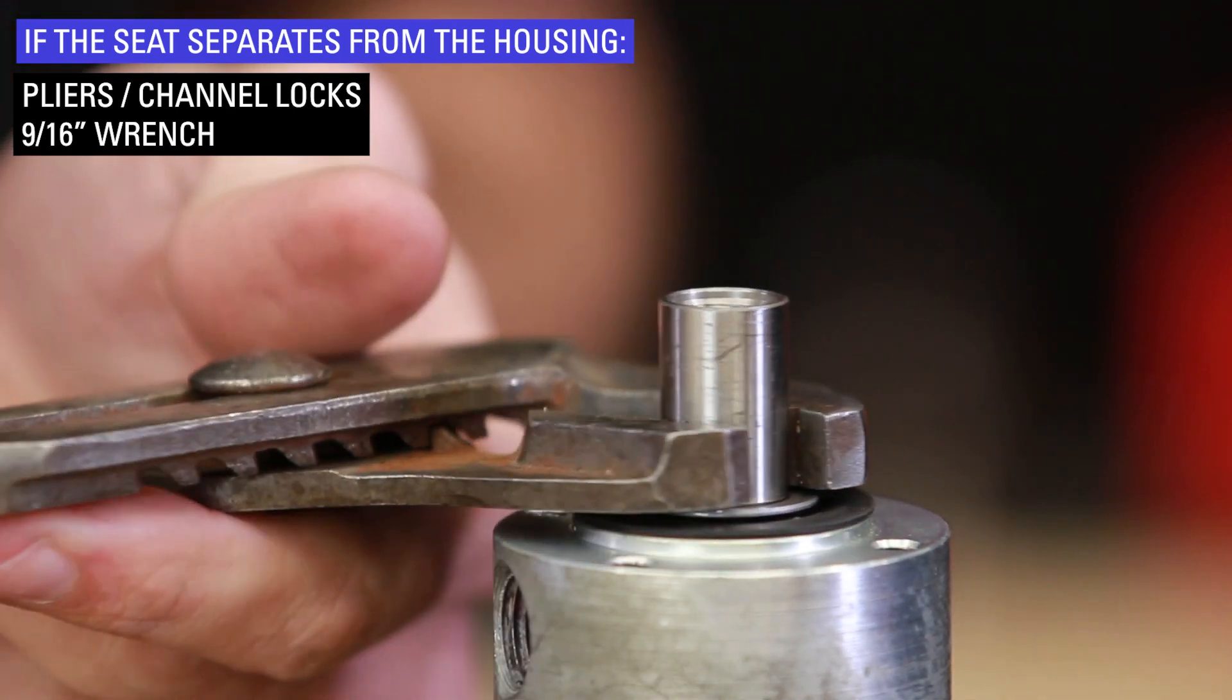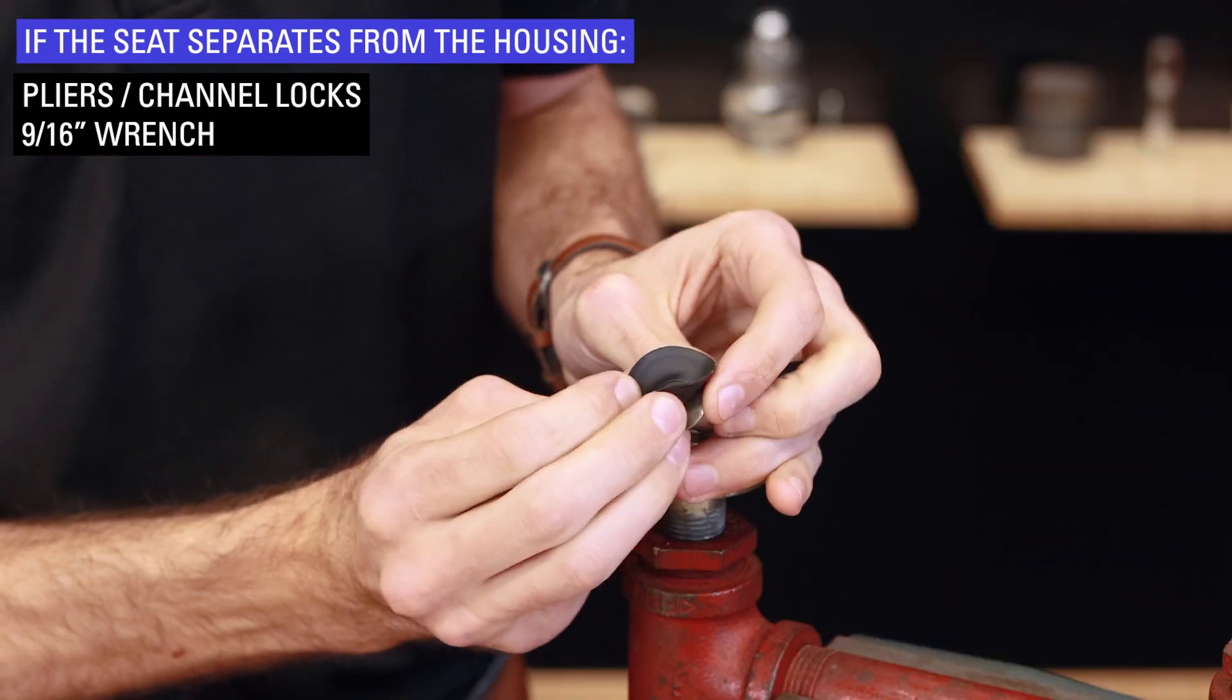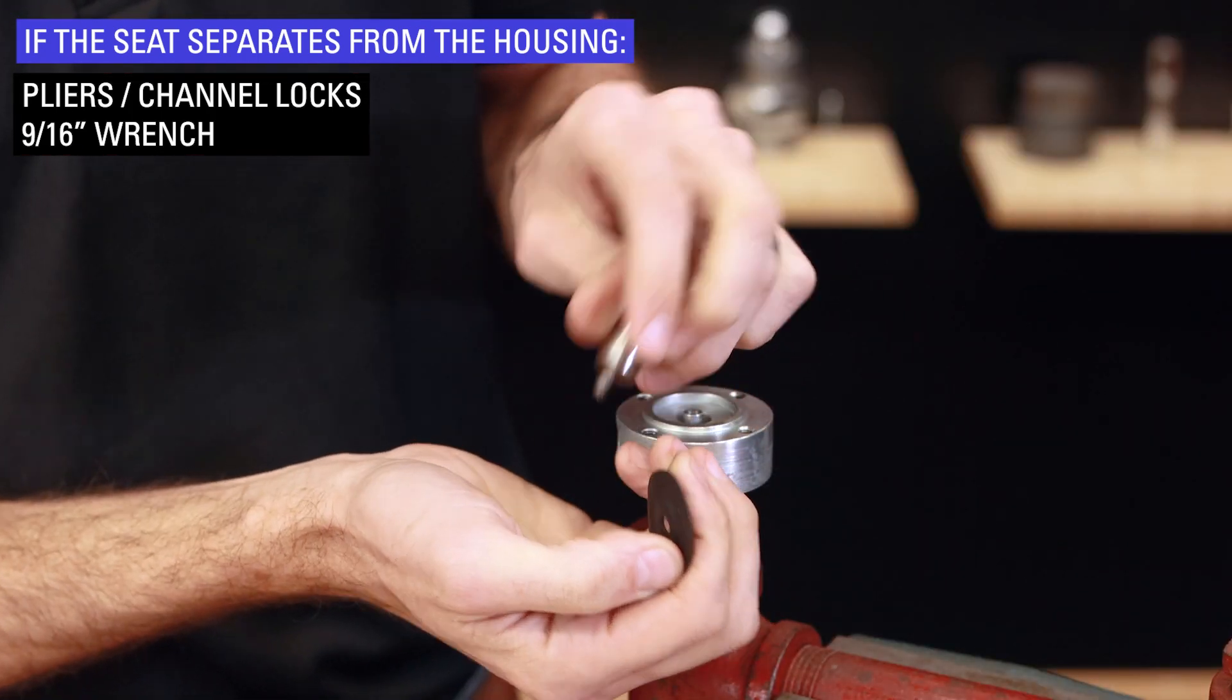Use pliers or channel locks to remove the housing from the base. Remove and discard the diaphragm and two diaphragm plates.